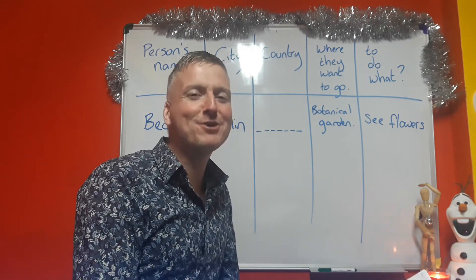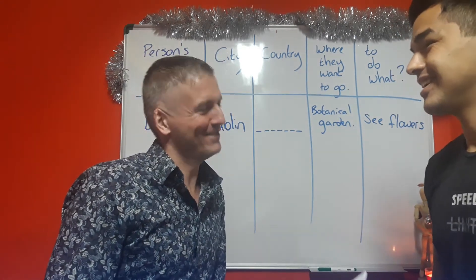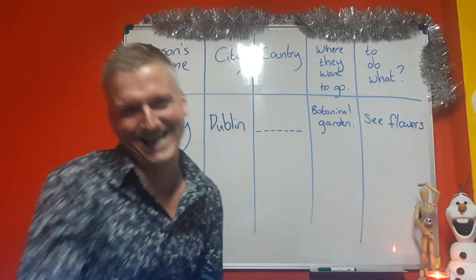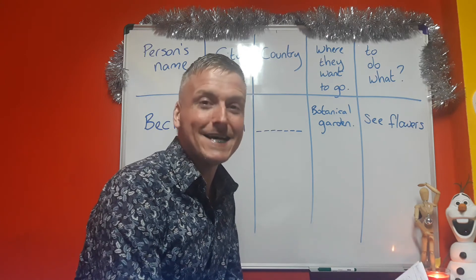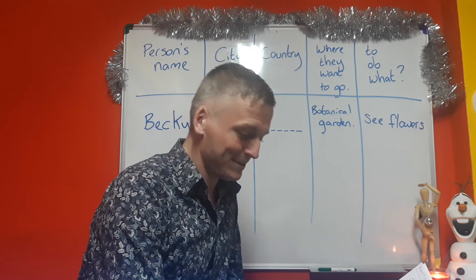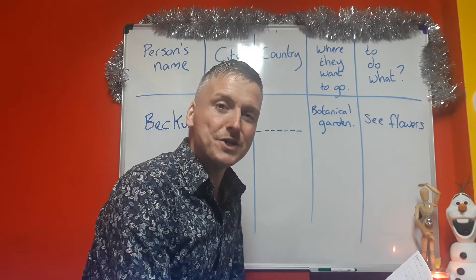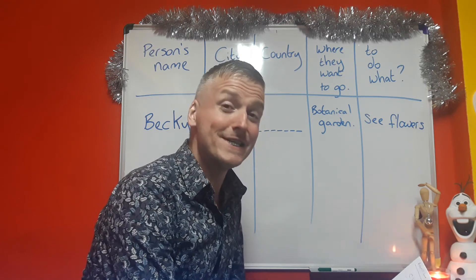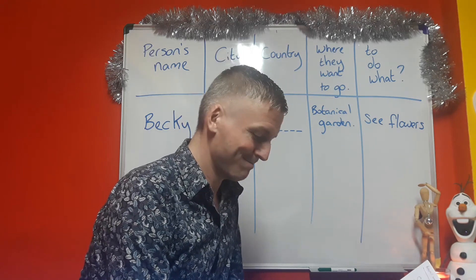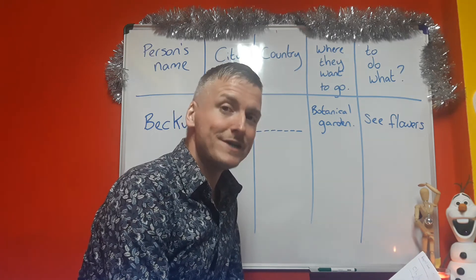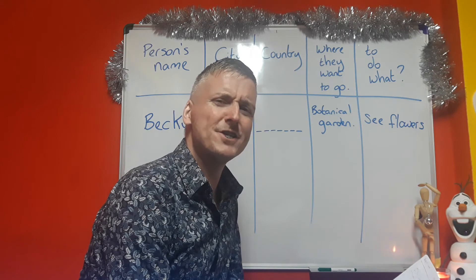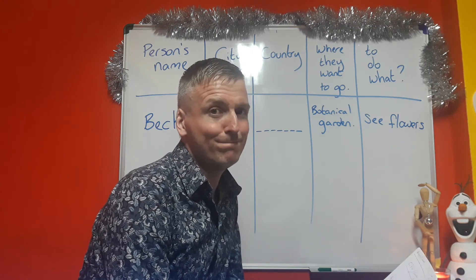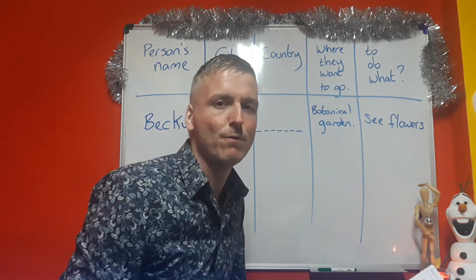Teacher Cher, how are you doing? Hey Andy, I'm doing great. I want to go to Paris. I want to go to Paris to see the Eiffel Tower. So it was Teacher Cher — he wants to visit Paris, he wants to go to the Eiffel Tower, and what he wants to do is see the Eiffel Tower.